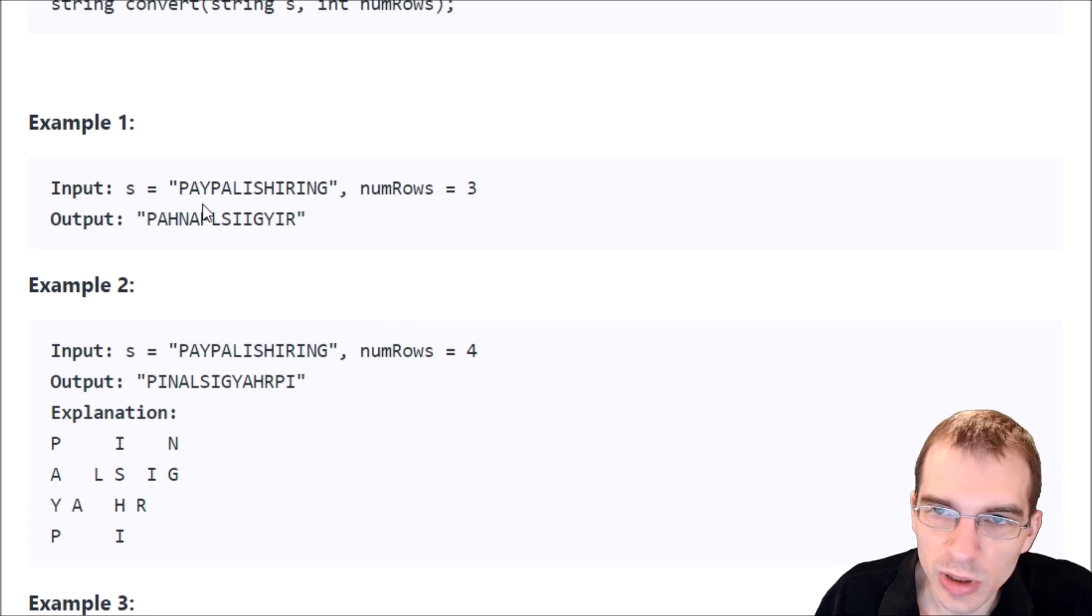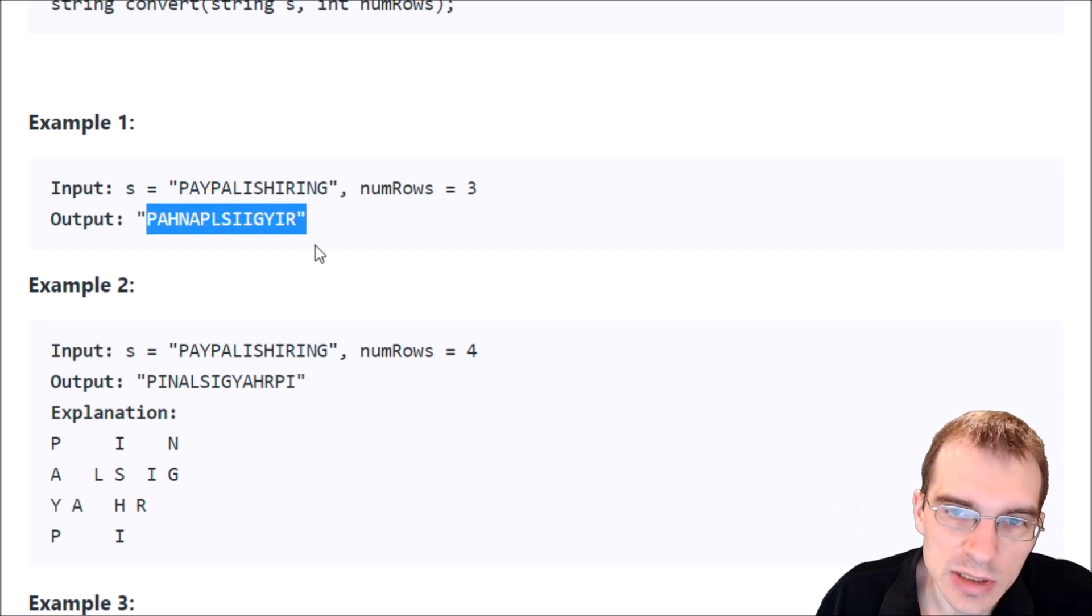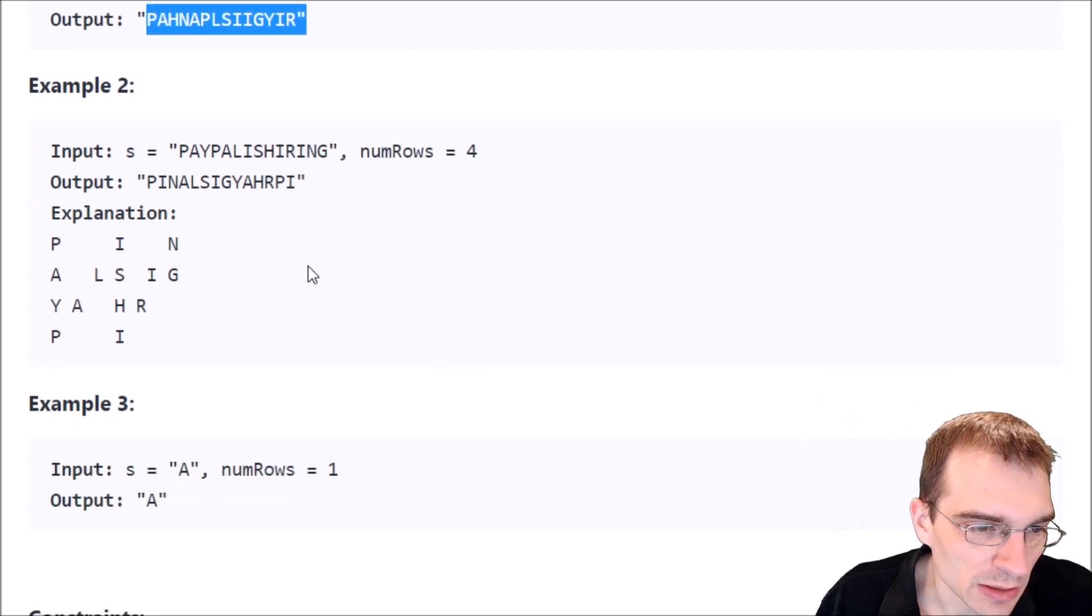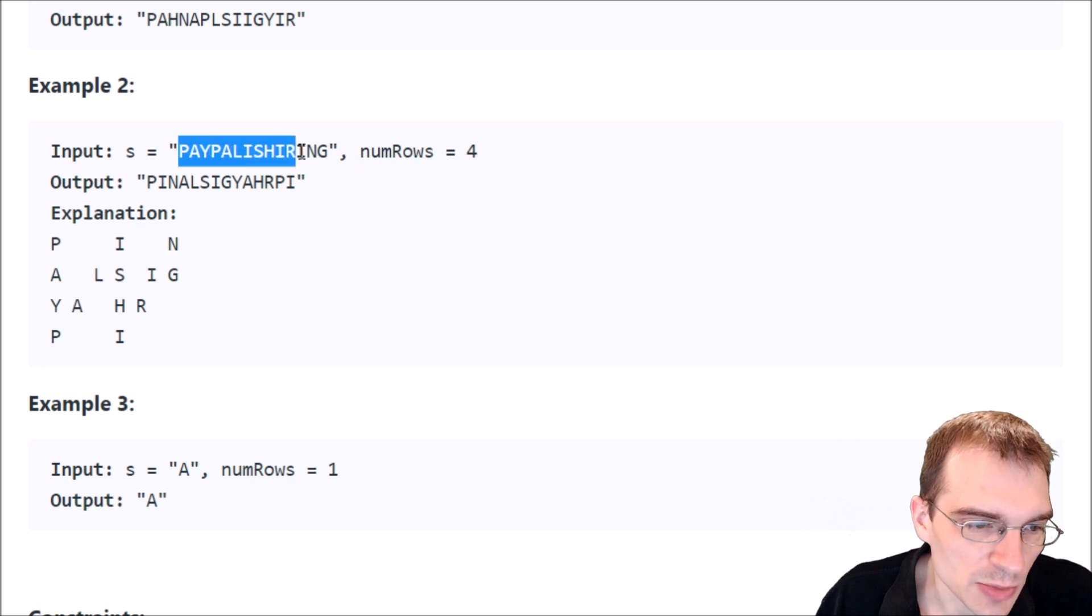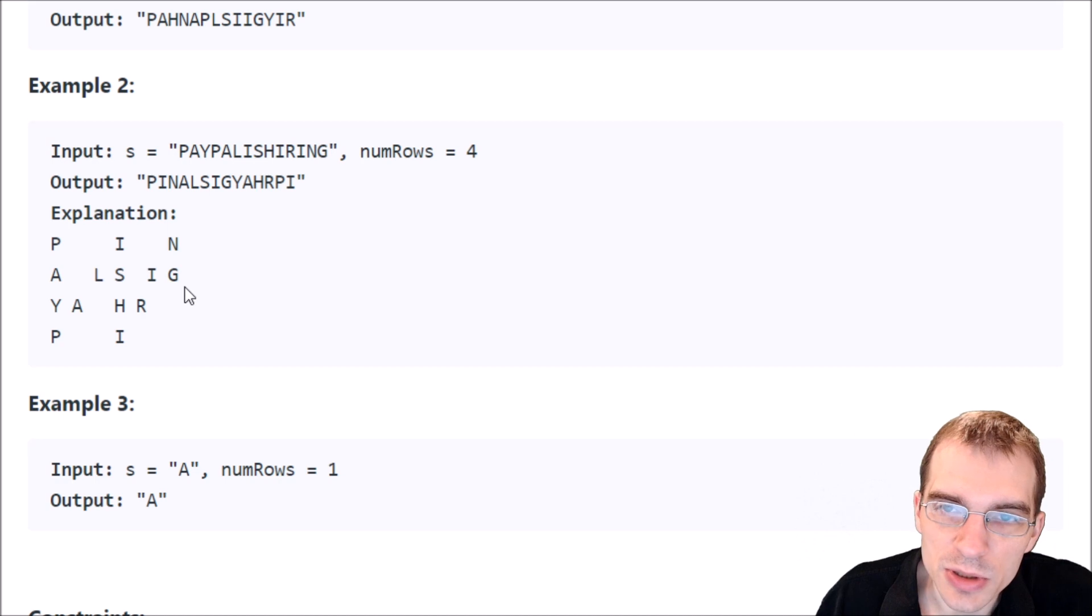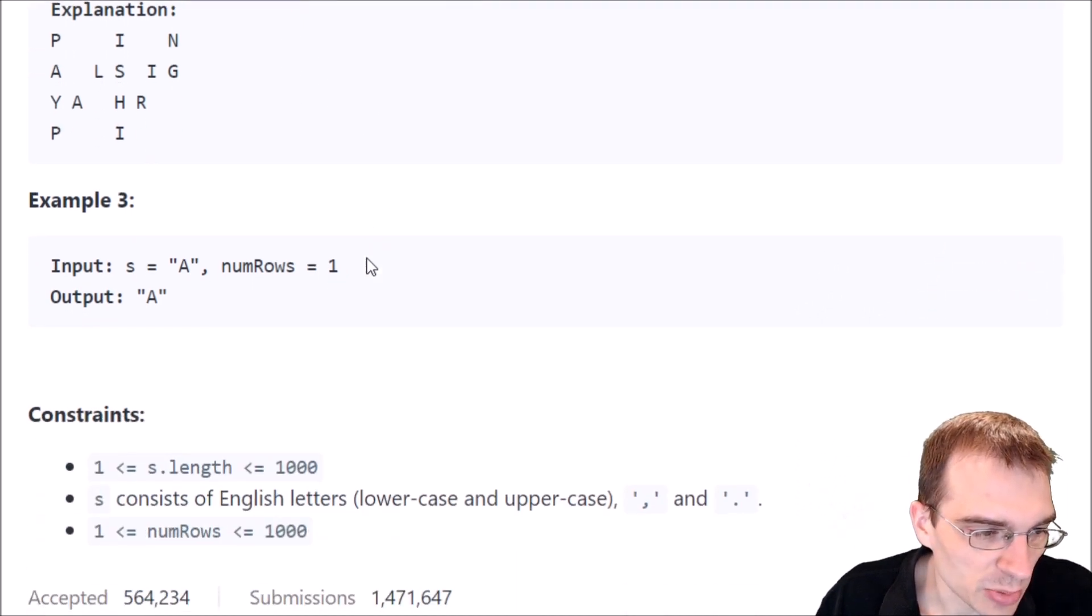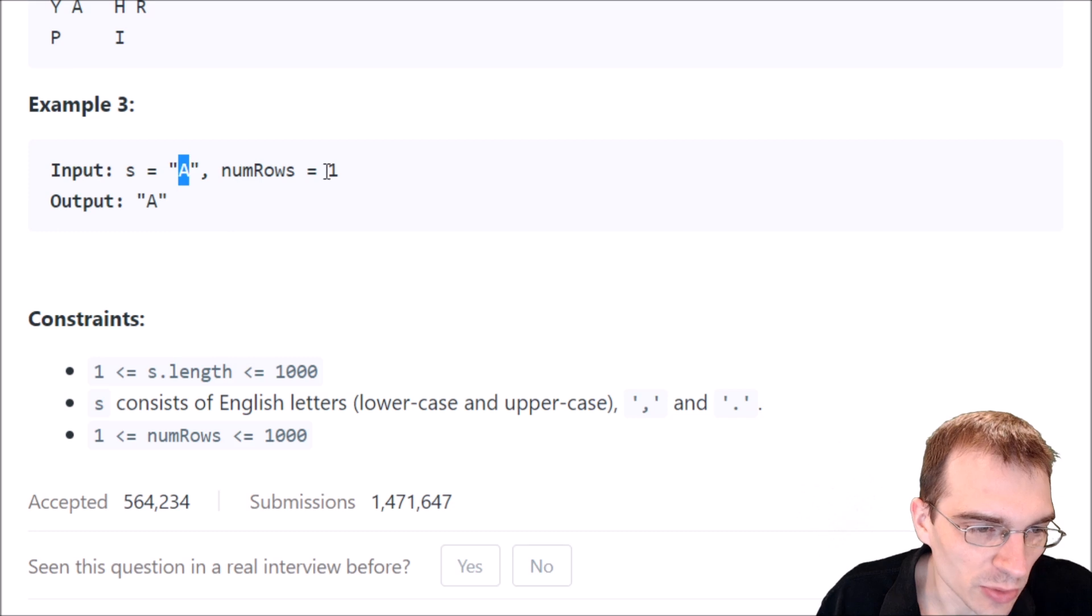So example one, we're given that same string we just looked at with the number of rows three. The output is each of the rows in order instead of in the zigzag configuration. The third example is just an input of A only with one row, and in that case we just output A.